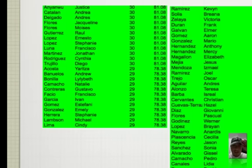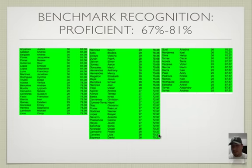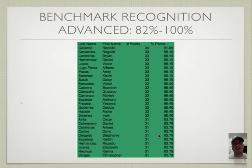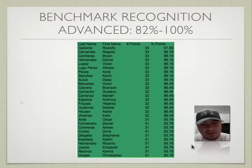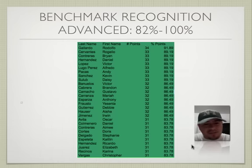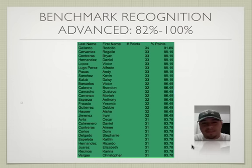Now we've got advanced — these are the most students we've ever had at advanced, so this has been our top performing class. 82 to 100%. Reading in increasing order: 31 out of 37 — Christopher Vargas, Karina Rezinos, Elizabeth Juarez, Ricardo Hernandez, Caitlin Espeleta, Stephanie Delgado, Doris Cortez, Amy Conteras, Daniel Colmenero, Oscar Avila. Congratulations, 31 out of 37.